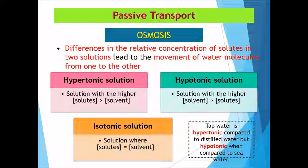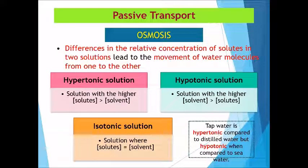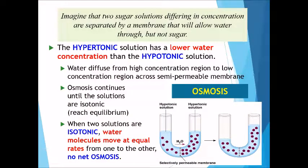In osmosis, there are three different types of solutions due to different concentrations of solutes. The first is hypertonic solution — a solution containing a higher number of solutes compared to its solvent. The second is hypotonic — a solution with a higher amount of solvent compared to its solutes. The third is isotonic — where solutes and solvent are in equal amounts or in equilibrium. For example, tap water is hypotonic compared to seawater.